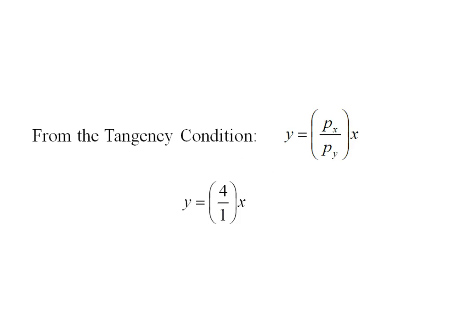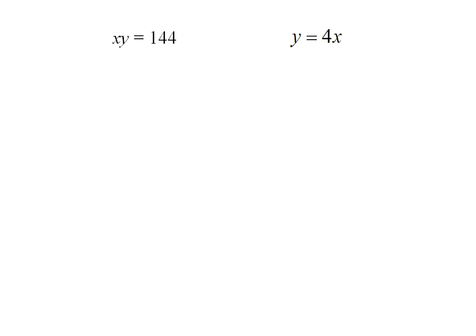I've got my tangency condition. I can plug in my new budget line prices which are 4 dollars for x and 1 dollar for y, and now I've got two equations and two unknowns. Substituting in I can solve and I get x has 6 units. Y is 24 units.